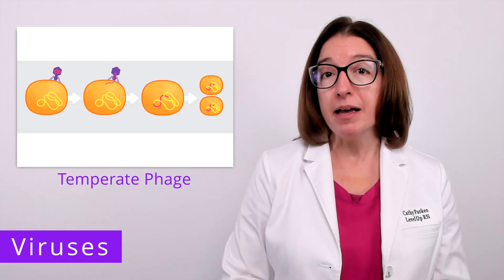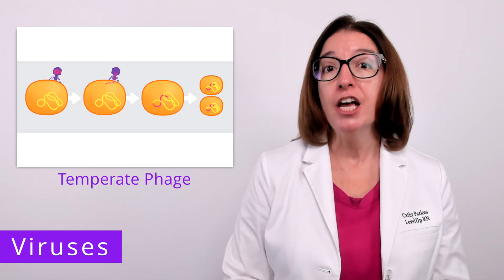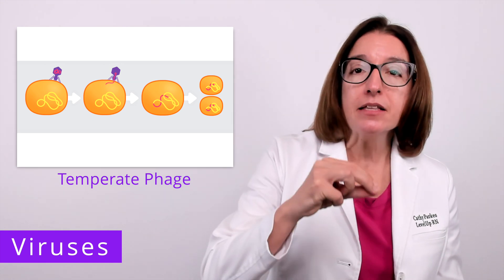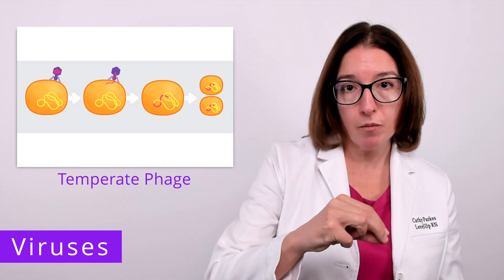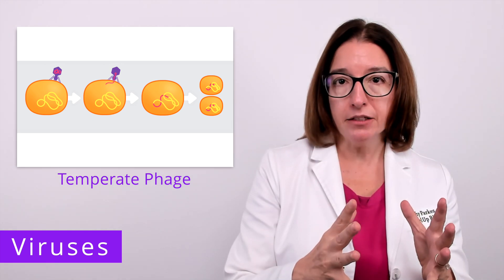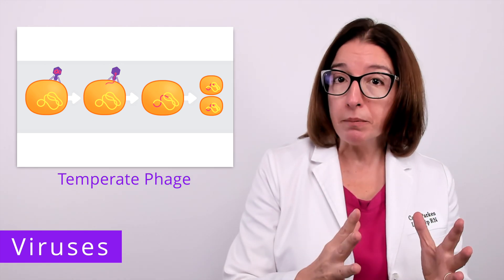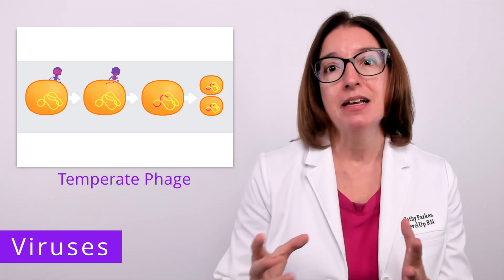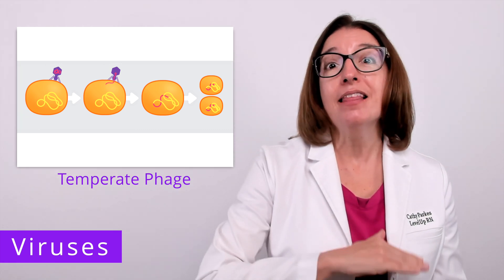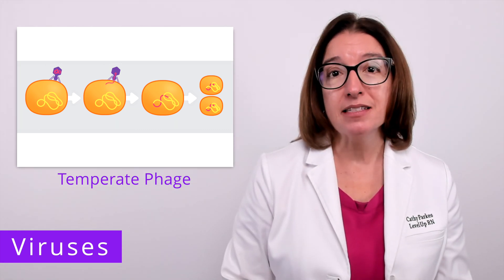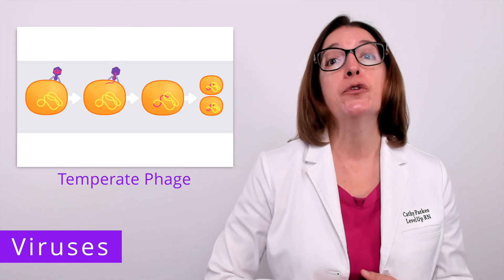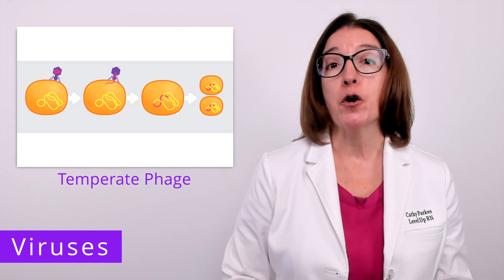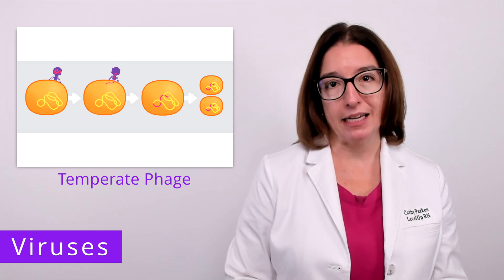Whereas a temperate phage integrates its genetic material into the host cell's chromosome, and that genetic material is replicated when the host cell replicates. In the next video in this playlist, we will go into detail about the different ways that a bacteriophage can replicate.